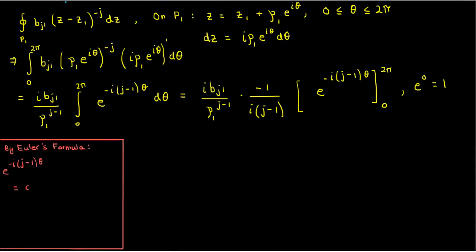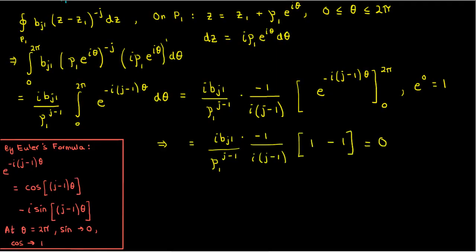By Euler's formula I know that the sine term is 0 in both cases since j is an integer and the sine of an integer multiple of 2π is always 0. I also know that the cosine of 2π and the cosine of 0 are both 1. So my integral expression would just be 1 minus 1 which is 0. Note that this is true only for integer values of j that aren't 1. If j did turn out to be 1 then this denominator would be undefined and we wouldn't be able to use this integral.